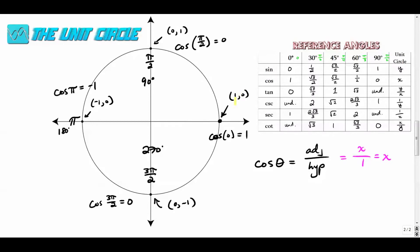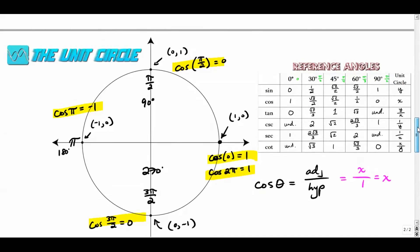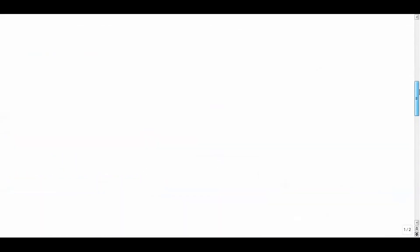And those are our five really key points, right? Cosine of zero is one. Cosine of pi over two is zero. Cosine of pi is negative one. Cosine of three pi over two is zero. And then we come back to the start. Cosine of two pi or 360 degrees is also one. It's periodic, right? It keeps going around and around and around. All these values in the unit circle just keep repeating themselves over and over and over again because it is a circle.